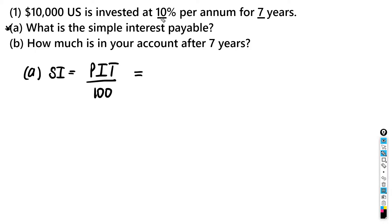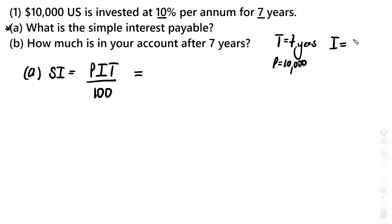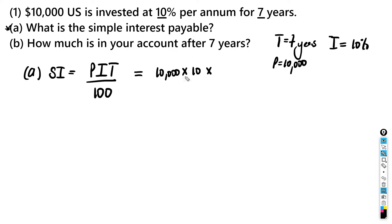The interest is 10%, the principal is $10,000, and the time is seven years. So we get 10,000 multiplied by 10 multiplied by 7, divided by 100. The two zeros cancel, giving us 100 times 10 which is 1,000, times 7, which equals $7,000 simple interest.